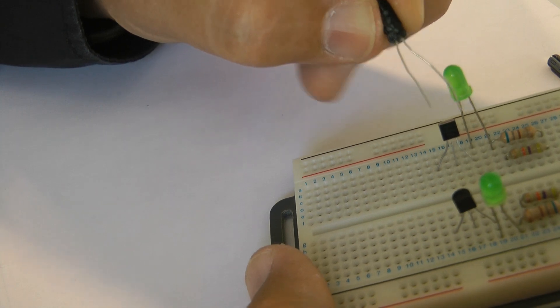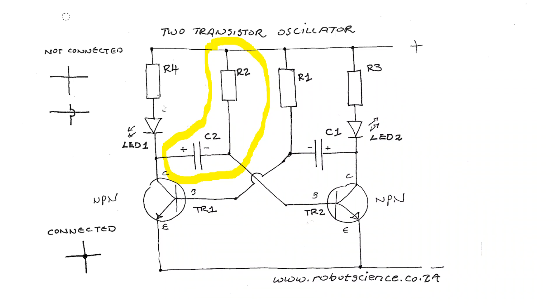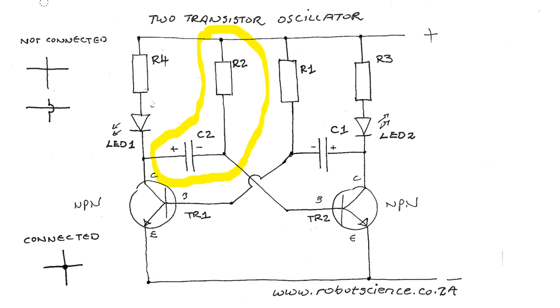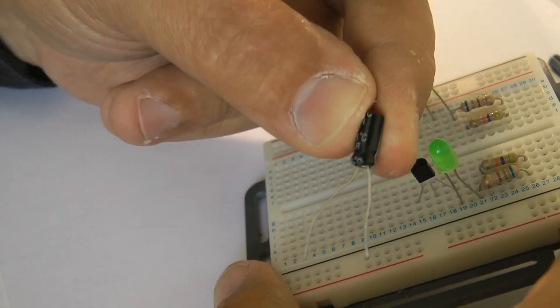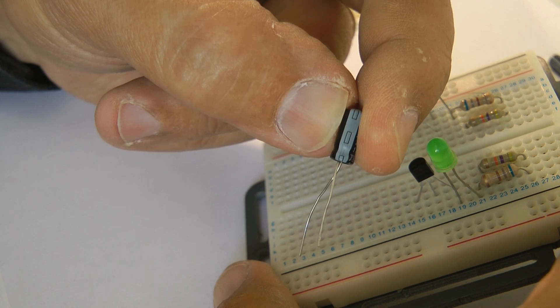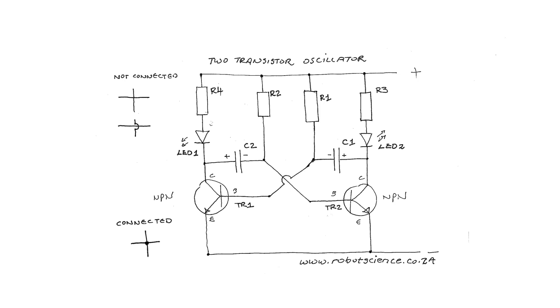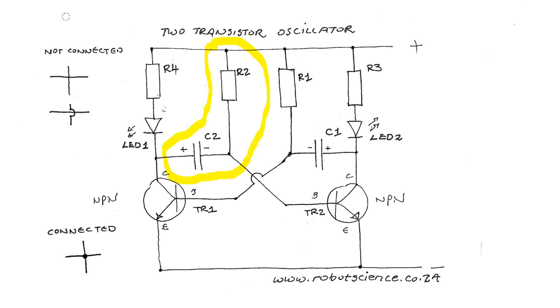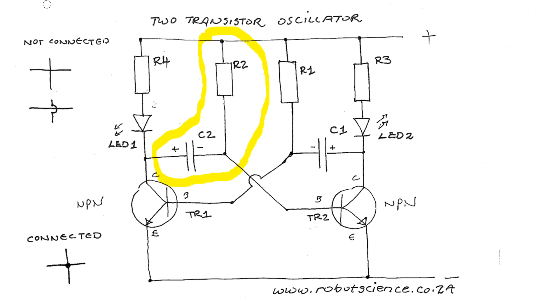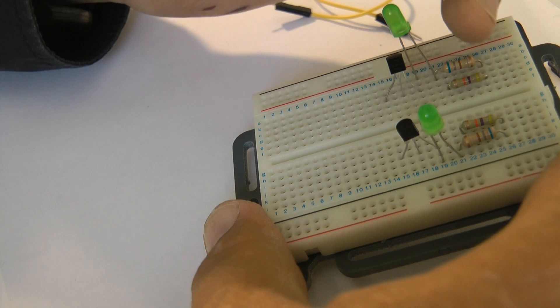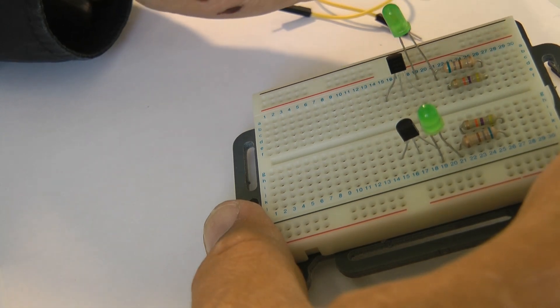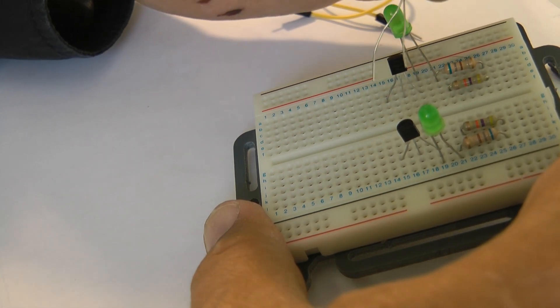We're going to put this resistor over here. This capacitor forms part of an RC network, a resistance capacitance network. We're going to put this capacitor into the circuit. There's the minus leg, there's the plus leg. If you look at the schematic diagram what you'll notice is that this capacitor works with this resistor over there to form the RC network.